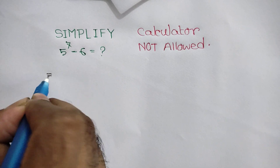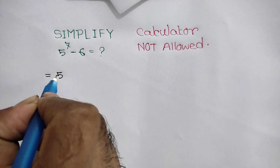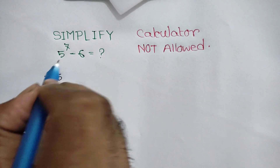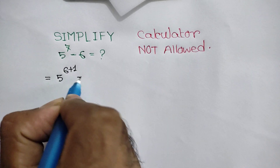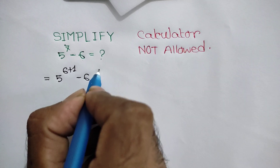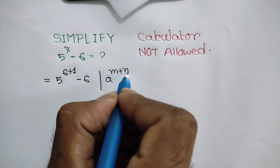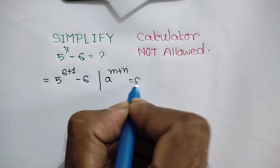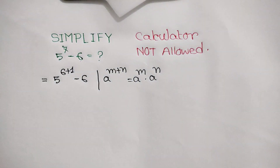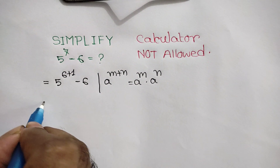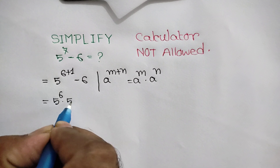5 to the power 7 can be written as 5 to the power 6 plus 1, minus 6. We know that a to the power m plus n is equal to a to the power m times a to the power n. So we can write here 5 to the power 6 times 5 to the power 1.